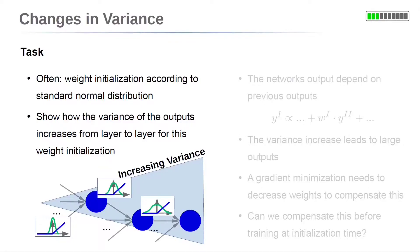At initialization, the output values from the neurons of a specific layer are distributed according to a certain distribution function. For example, a standard normal distribution with mean 0 and variance 1 for the weights could be used. We examine how this choice influences the variance of the distribution of the output values of the neuron layers. We will calculate how the variance of the output increases from layer to layer if a standard normal distribution is used for weight initialization.